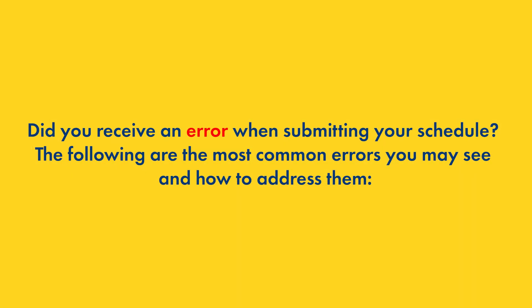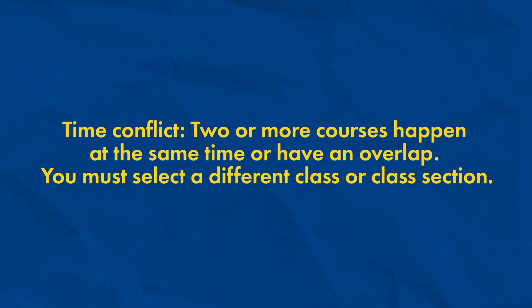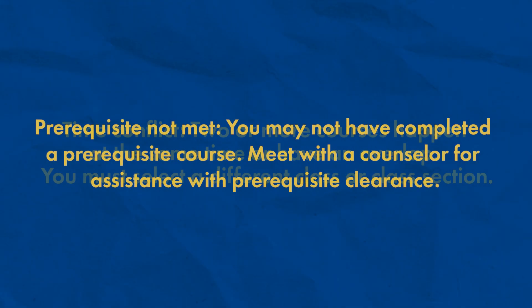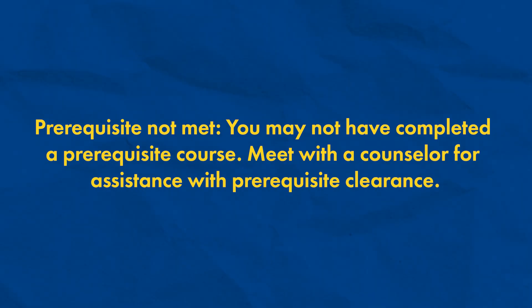Did you receive an error when submitting your schedule? The following are the most common errors you may see and how to address them. Time Conflict: two or more courses happen at the same time or have an overlap — you must select a different class or class section. Prerequisite Not Met: you may not have completed a prerequisite course — meet with a counselor for assistance with prerequisite clearance.